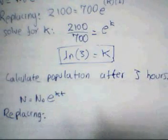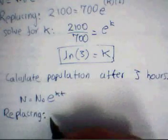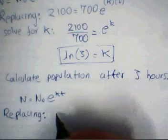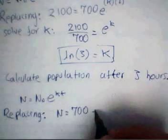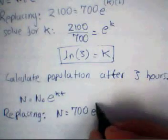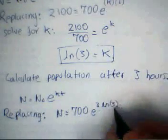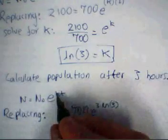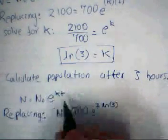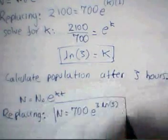We obtain that N equals 700 e to the 3 ln(3).